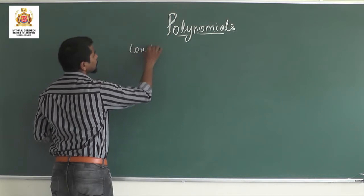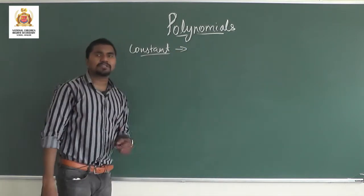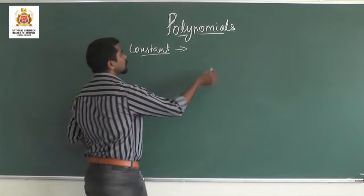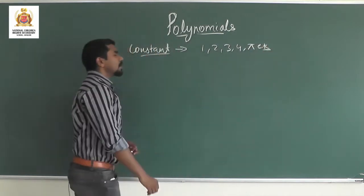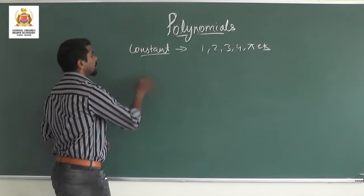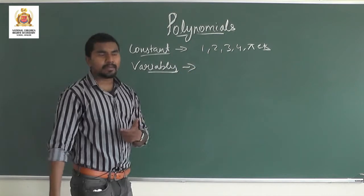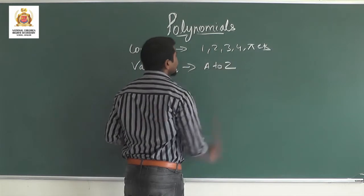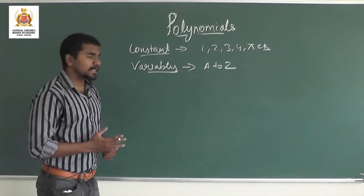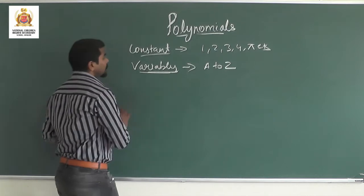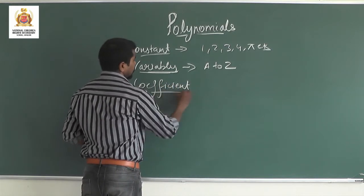The first concept is 'constant'. Basically, constants are numerical values — like 1, 2, 3, 4, pi, etc. These are all known as constants. After this, variables are alphabetical letters from A to Z. Since they have no particular fixed value, we call them variables. Next is 'coefficient'.